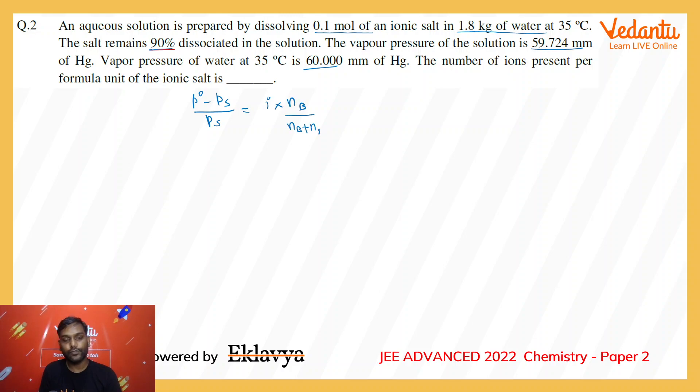Here i is representing the van't Hoff factor, P⁰ is the pressure of pure water, and Pₛ is the pressure of the solution. If you put the values, P⁰ is 60 minus 59.724 divided by 59.724, which is equal to i times 0.1 mole.